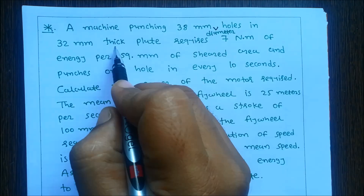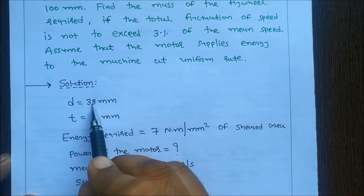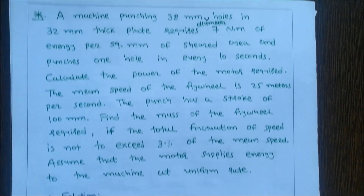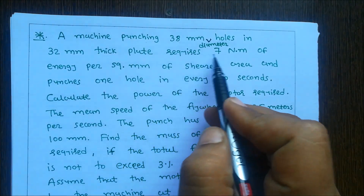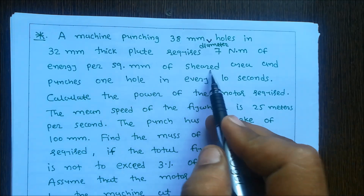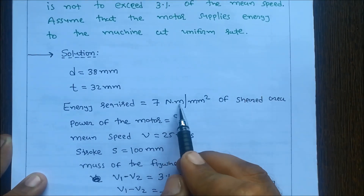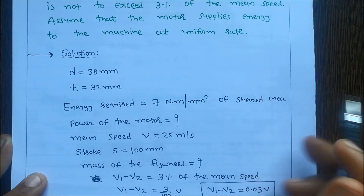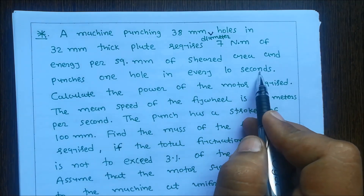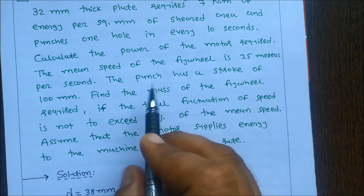So diameter d = 38 mm, thickness t = 32 mm, energy required = 7 N·m per mm² of shear area. We need to calculate the power of the motor required. The mean speed of the flywheel is 25 meters per second.